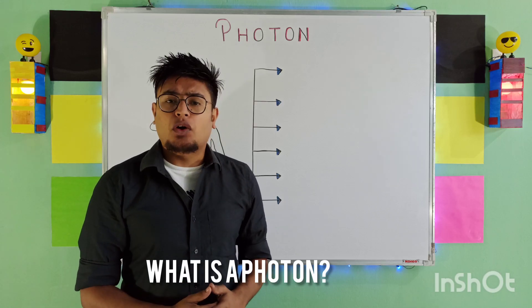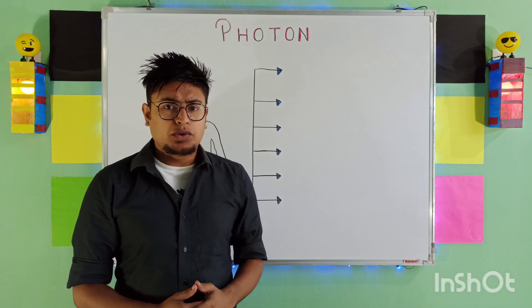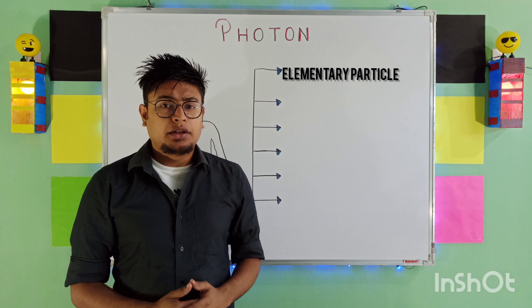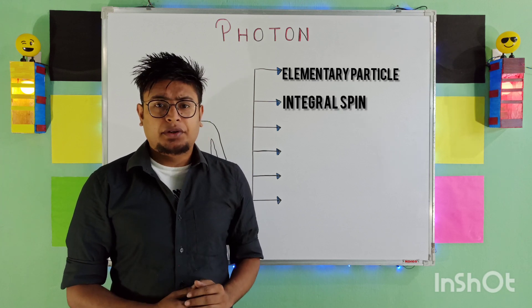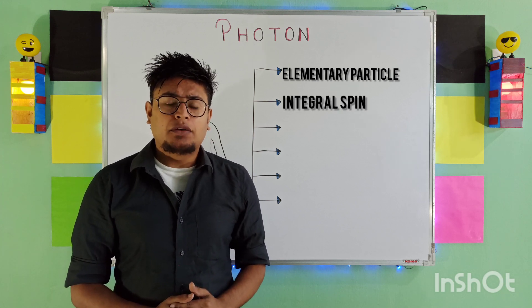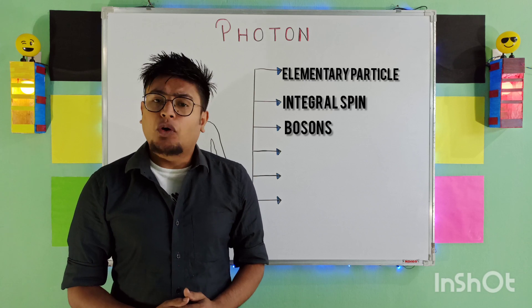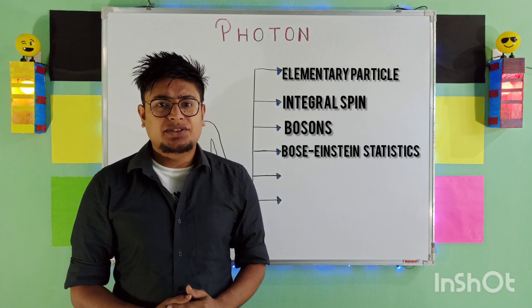What is a photon? First and foremost, it is an elementary particle. It has integral spin and hence comes under the family of bosons. It follows the Bose-Einstein statistics.